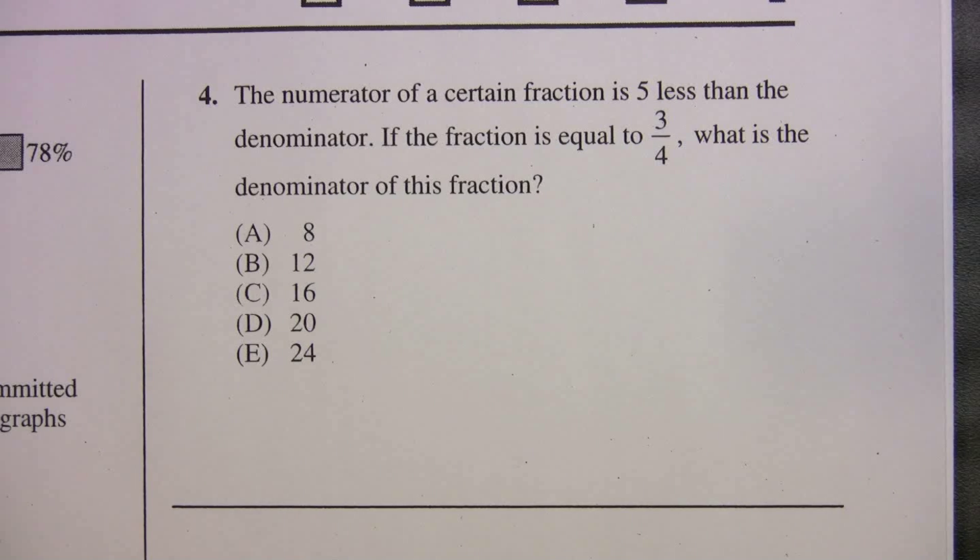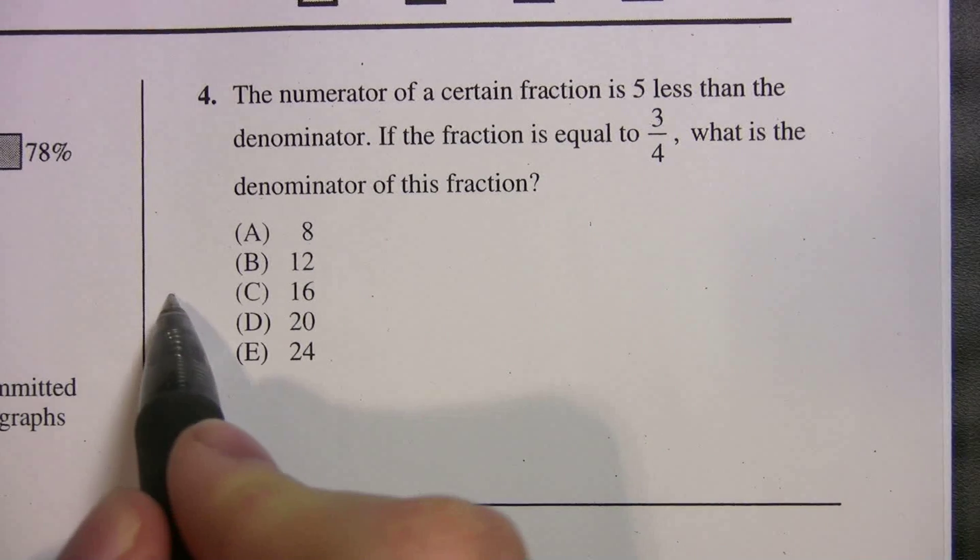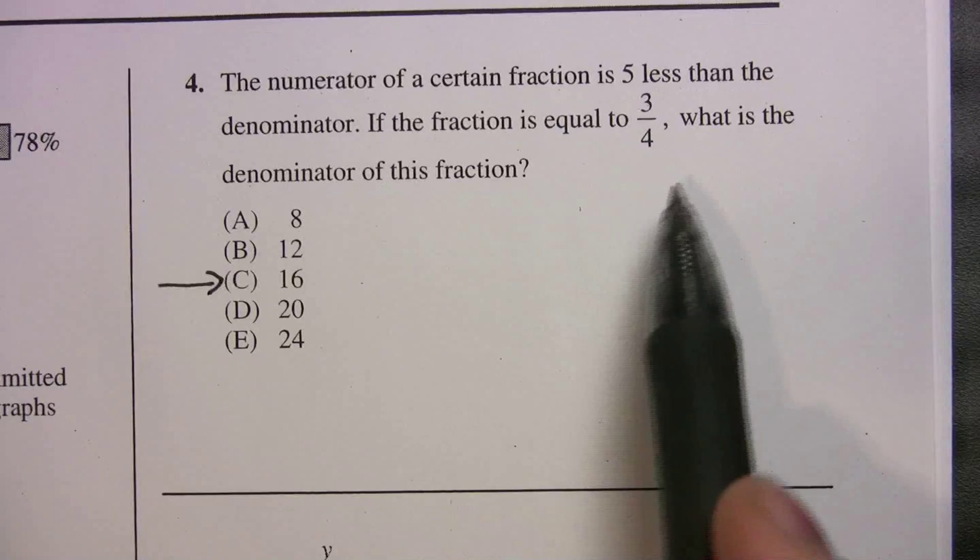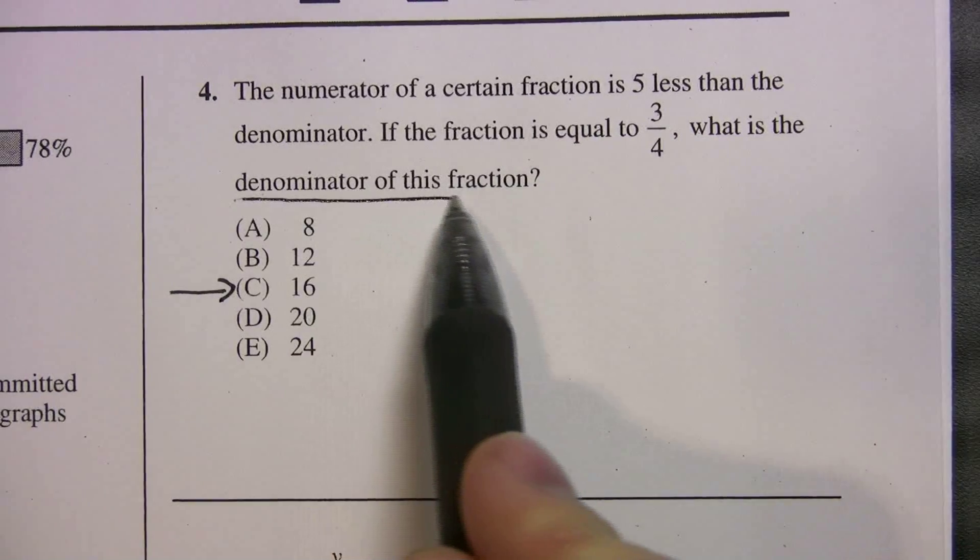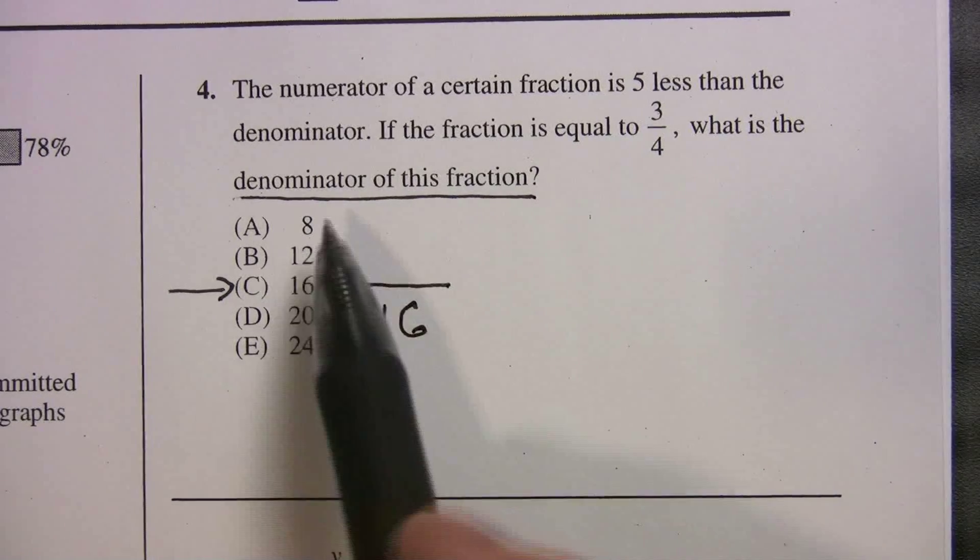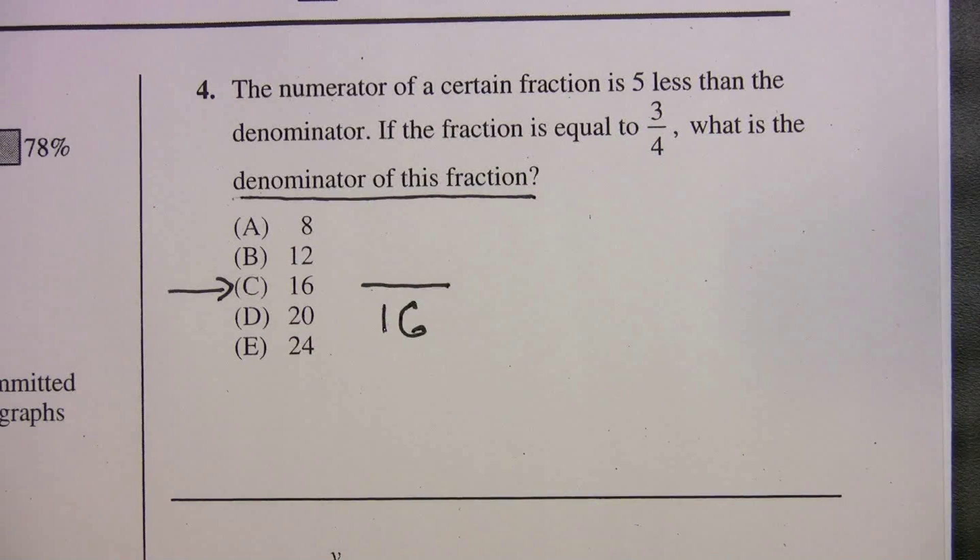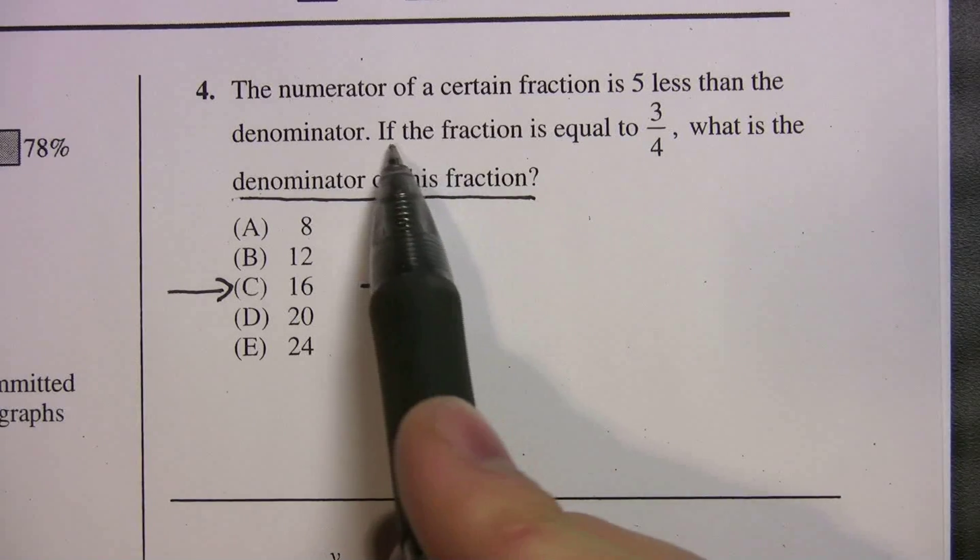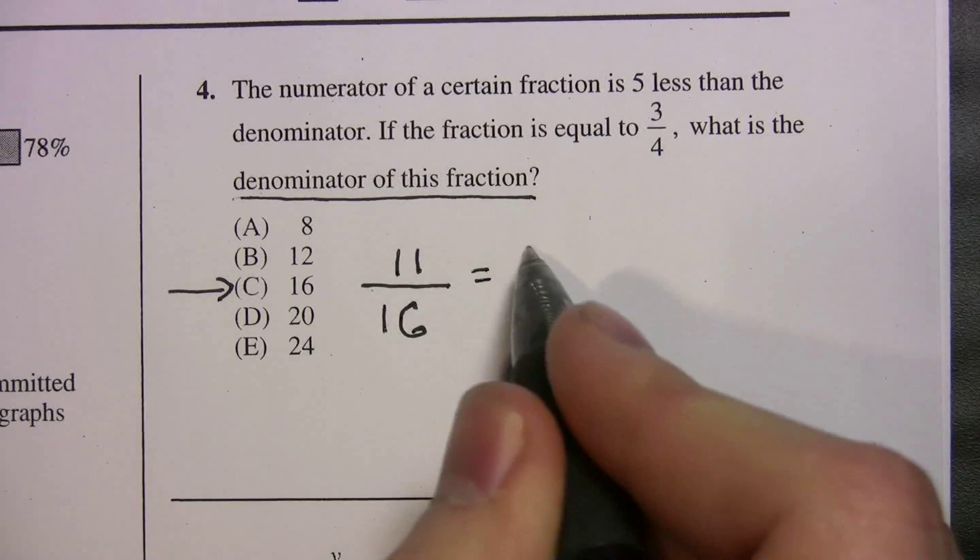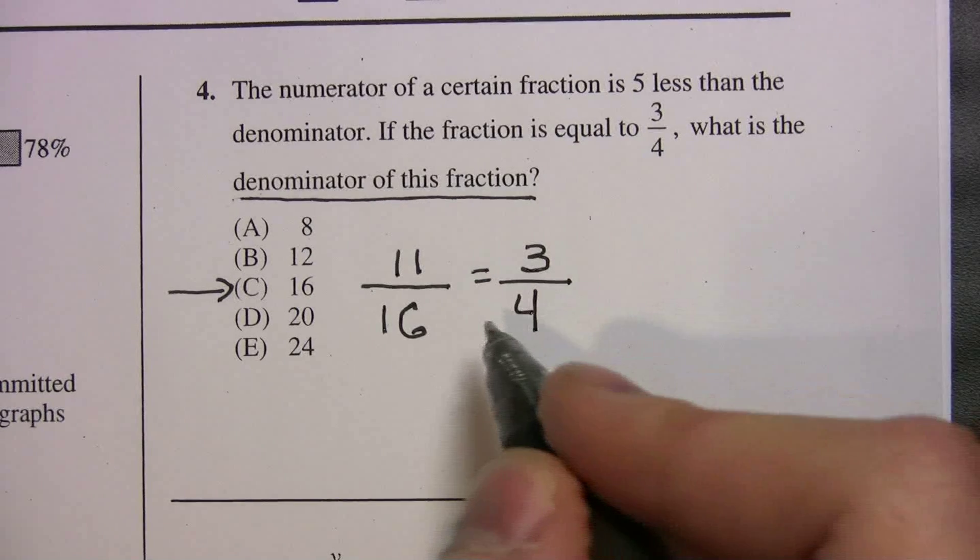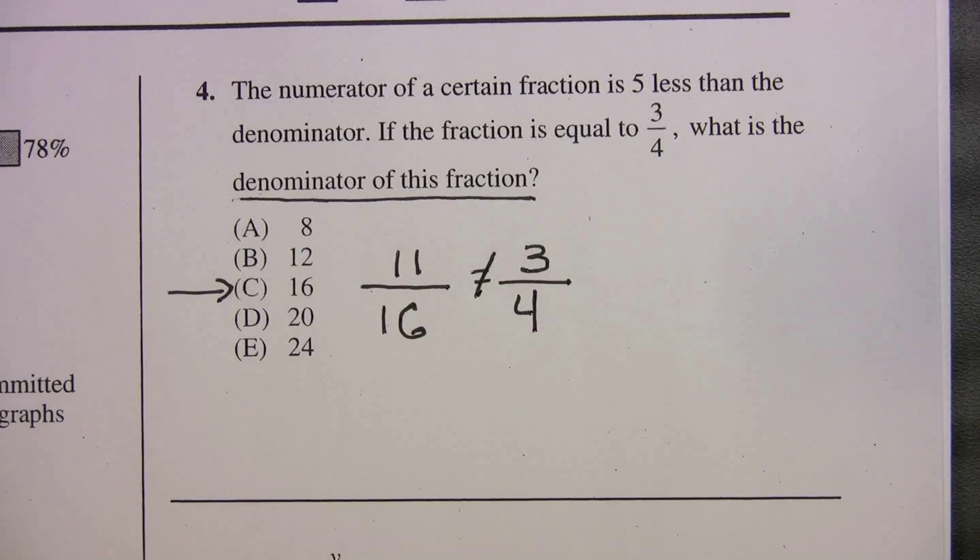So let's say you got to this and you had no idea how to do this, you couldn't do it algebraically. Well, this is how you work backwards. You can assume that choice C is correct. Now we just got to be aware, what are we saying when we pick choice C? It says, what is the denominator of the fraction? So we're assuming that the denominator is 16. And it says the numerator of the fraction is 5 less. So what's 5 less than 16? 11. So does 11 sixteenths equal 3 fourths? You can punch it into your calculator real quick, but you'll very quickly find out that 11 sixteenths does not equal 3 fourths.